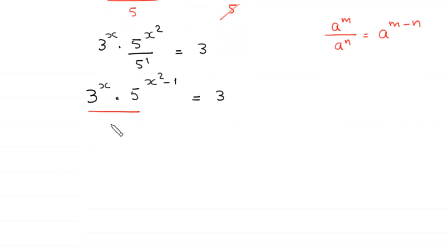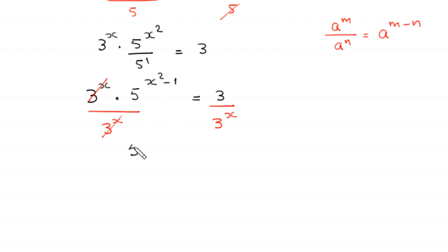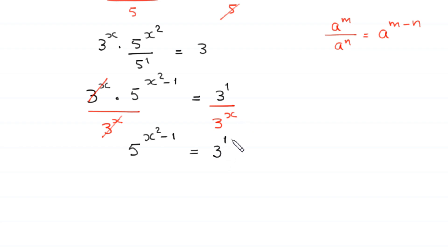Now we divide both sides of this equation by 3 to the power x. On the right-hand side, 3 to the power x gets cancelled, and on the left-hand side we are left with 5 to the power x squared minus 1 equal to 3 to the power 1 over 3 to the power x, which by the quotient rule becomes 3 to the power 1 minus x.